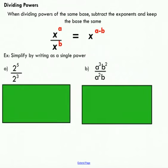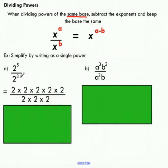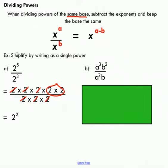The second exponent law also requires the same base — you cannot apply it otherwise. When dividing powers, you subtract the exponents. For example, 2 to the power of 5 over 2 to the power of 3: we can write this as five 2s over three 2s, then cancel pairs of 2s until none remain on the bottom. We're left with two 2s, which is 2 to the power of 2 — the same as 5 minus 3. So subtract your exponents to get the simplified power.